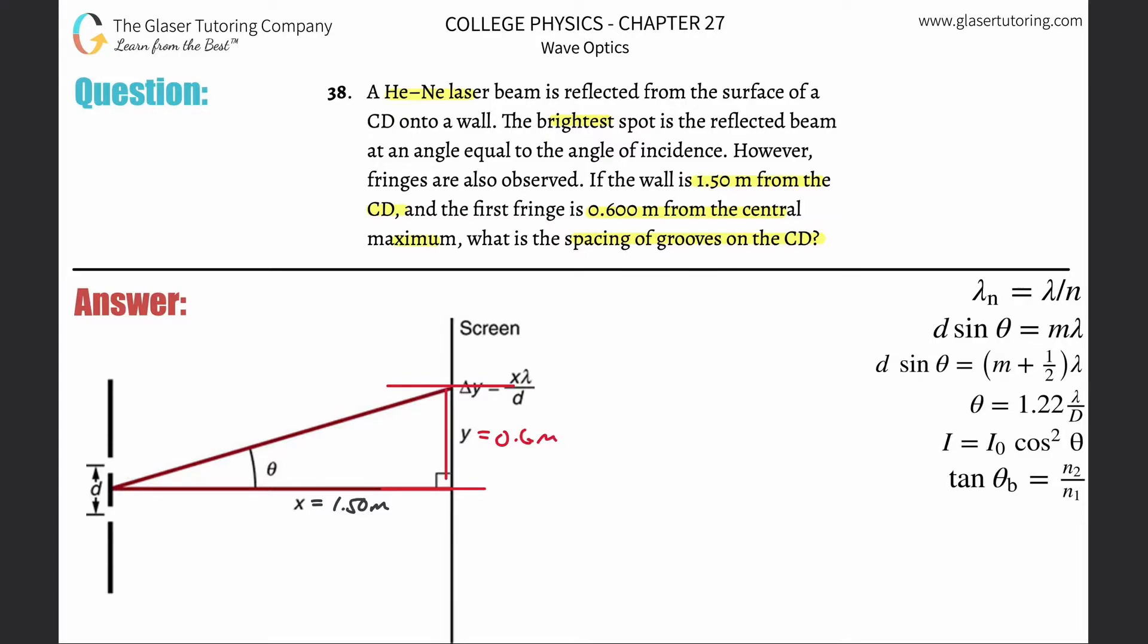So now what I can do with that information is I can solve for this angle, and I can use tangent to do that. Tan of the angle is the opposite side divided by the adjacent, so it's 0.6 divided by 1.5. They're both in terms of meters, so I'm fine. Take the inverse tan of both sides, so you do second tangent of 0.6 divided by 1.5, and that works out to be 21.8 degrees.